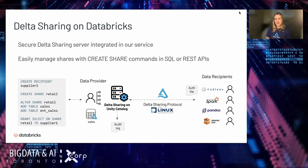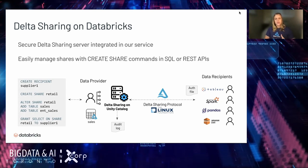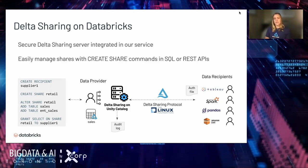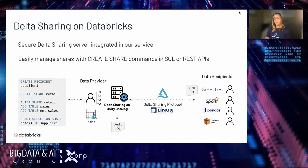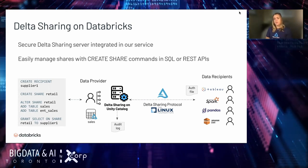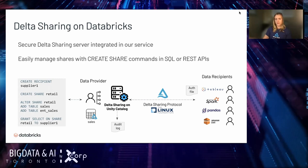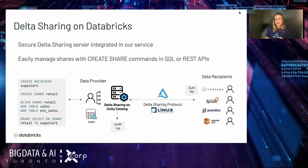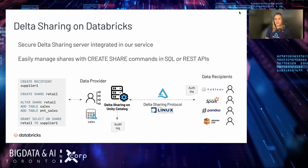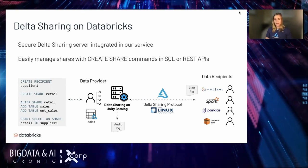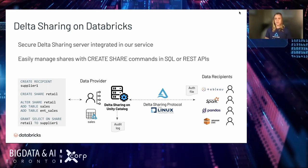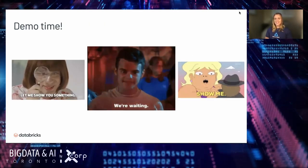The simple interface we've created uses SQL with statements you can see here. There's also a REST API for more programmatic interaction with managing shares. Putting our data administrator hat on: you'll first create a share object — 'create share retail'. Then you'll add tables to it using the 'alter share add table' syntax. It's a one-to-many relationship, so you can add or remove several tables from a share. Finally, you grant access using a familiar SQL grant statement: 'grant select on share to my supplier' — and it's important to note this is just read-only access. The recipient can then access these tables in any system they want, and they don't need to be Databricks customers.